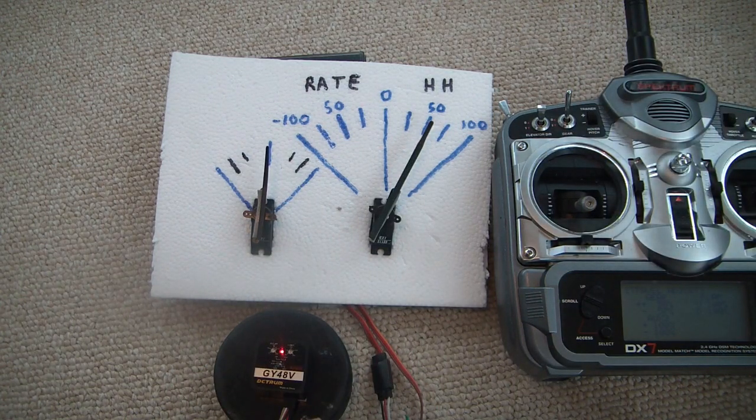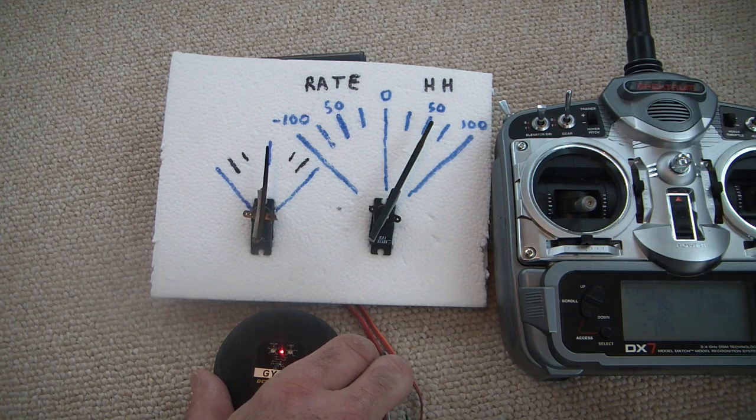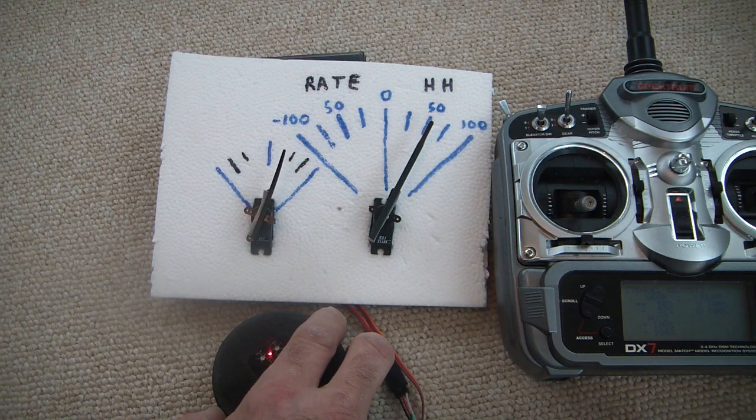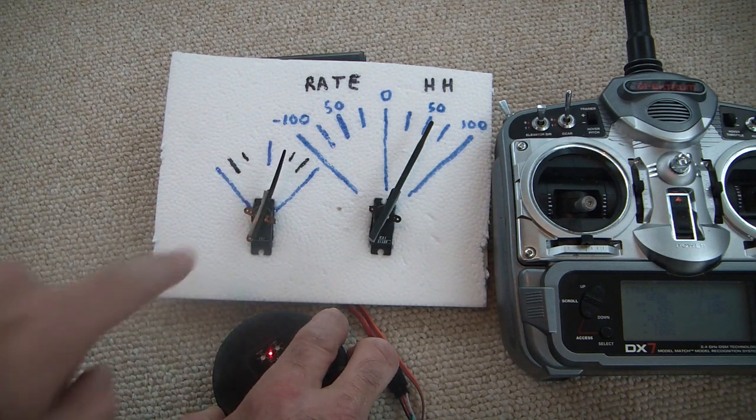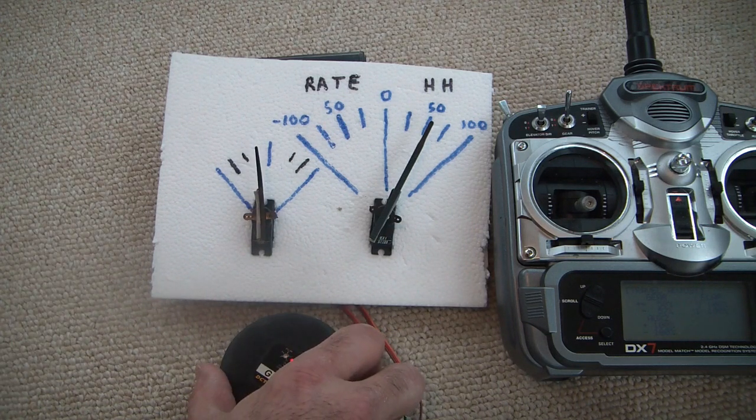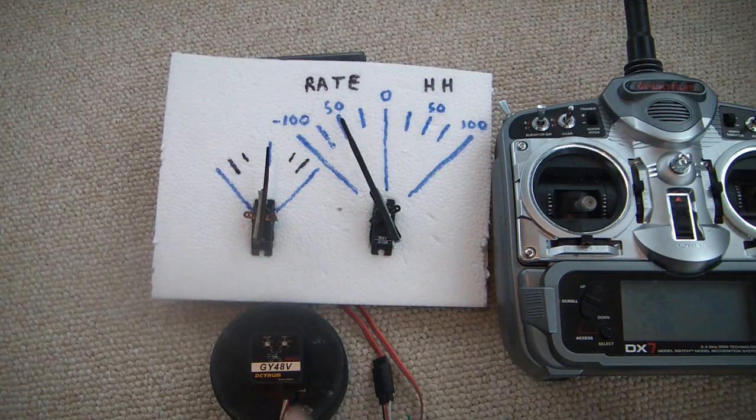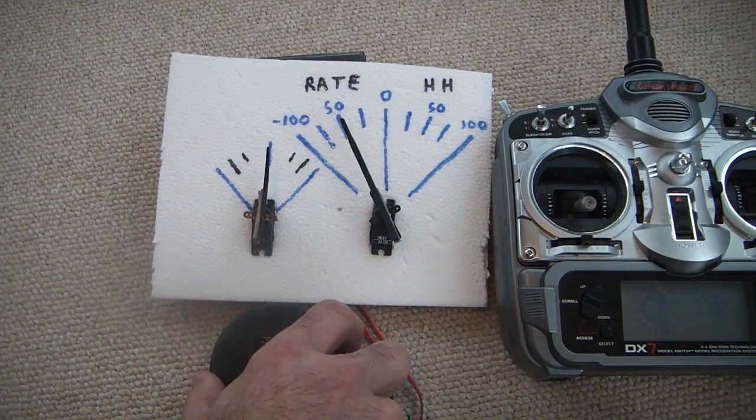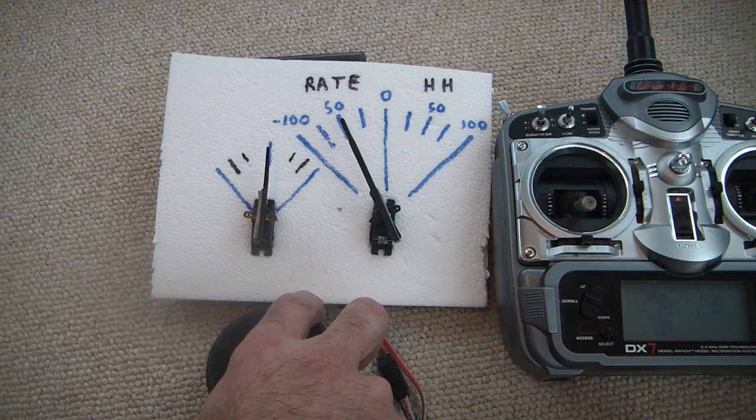So once again, what's the difference between heading hold and rate? Here's the difference. When I'm in heading hold and I move and stop, that servo is going to move and stay there. When I'm in rate mode, when I move that gyro, it's going to just bump and try to bring it back.